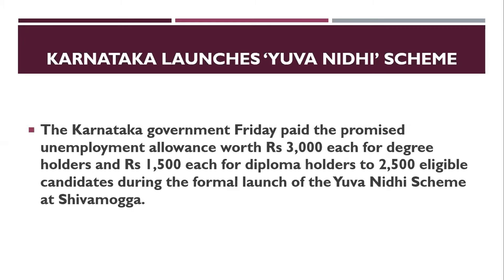Next is the Karnataka YUVA Scheme. The Karnataka Government started the YUVA Scheme for unemployed youth. Degree holders and diploma holders receive 1000 rupees, while other eligible candidates receive 200-1500 rupees under this scheme.